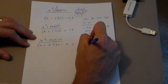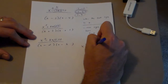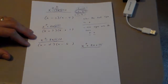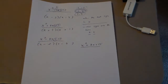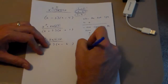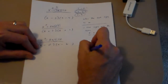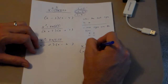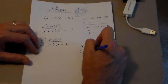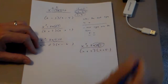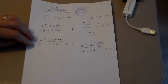Here's another one to try — pause the video and give it a shot. We make our parentheses, put our x's in, put our signs in. That last sign is positive, that middle sign is positive, so the signs are both positive. Factors of 15 that add to 8: that's 3 and 5.